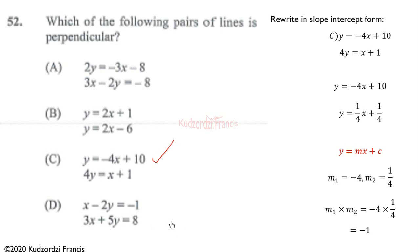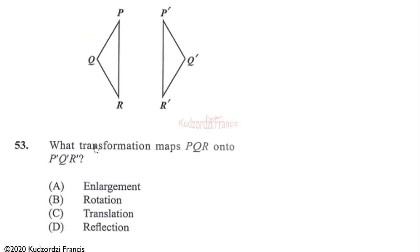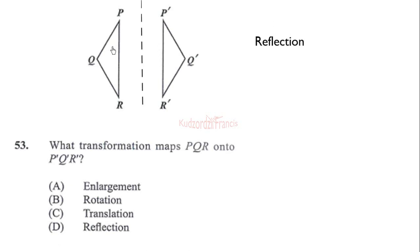Question 53: what transformation maps triangle PQR onto triangle P'Q'R'? We can see this is a lateral inversion — if you draw a mirror line, the distances from each triangle to the mirror line are equal. This is a reflection, like seeing yourself in a mirror. Therefore the correct answer is a reflection.